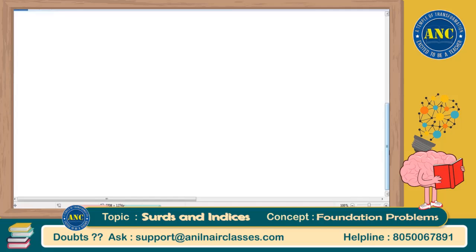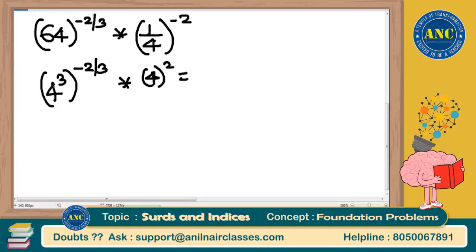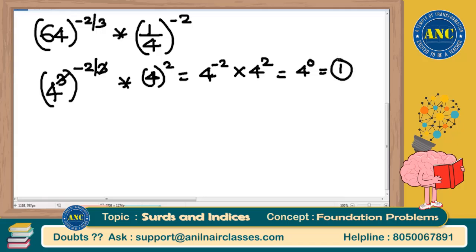For example: 64 to the power of minus 2 by 3 into (1/4) to the power of minus 2. Write 64 = 4 cube, so 4 cube power minus 2 by 3: the 3 cancels, giving 4 power minus 2. For (1/4) power minus 2: bring 4 to the numerator, giving 4 power 2. Now 4 power minus 2 × 4 power 2 = 4 power 0 = 1.